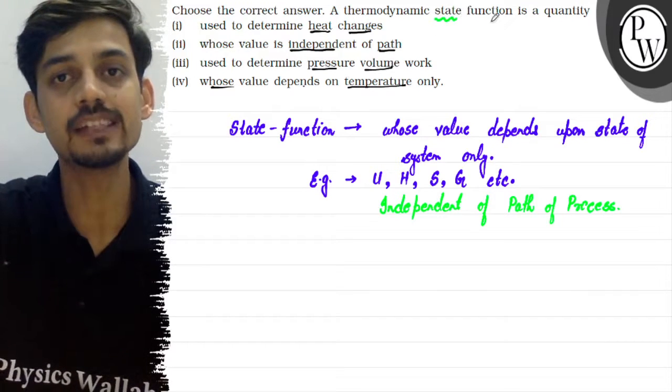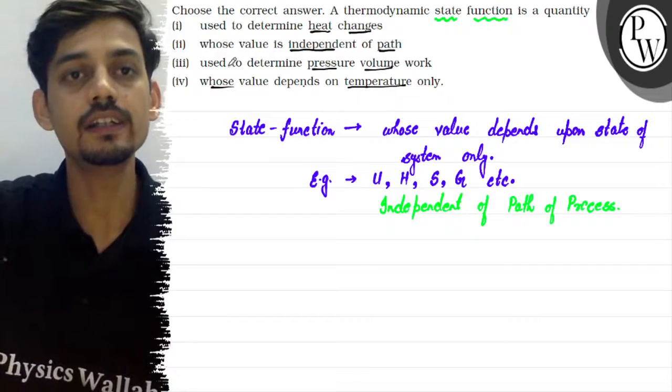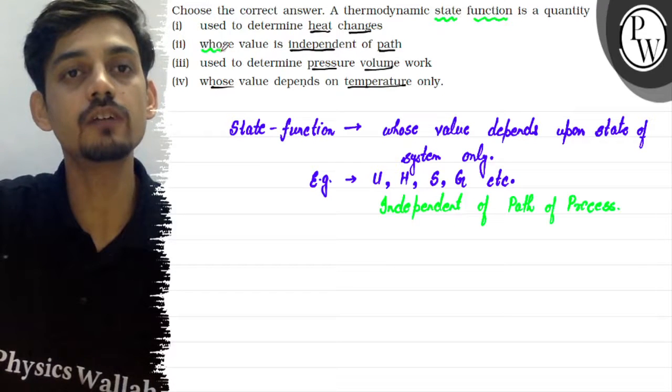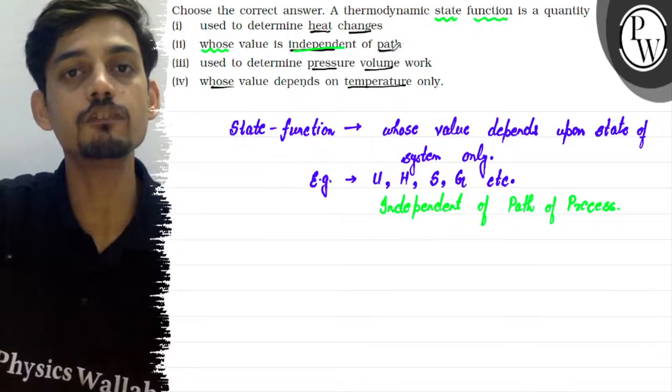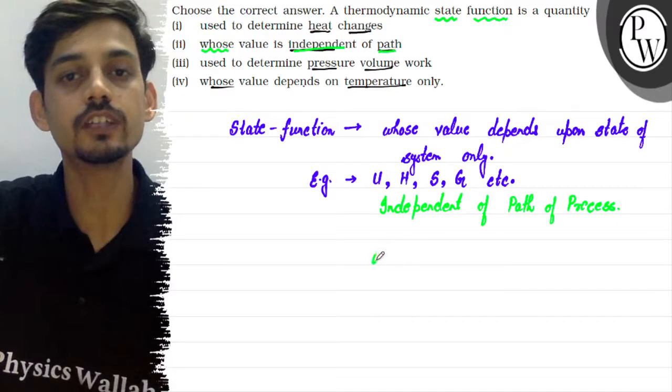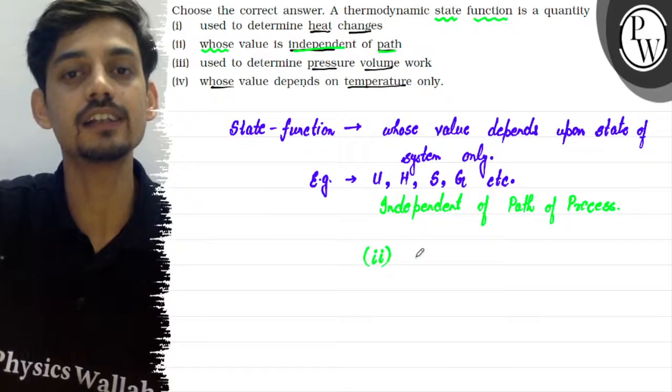As the question says, thermodynamic state function is a quantity. So option two is correct - whose value is independent of path. If we look at this question, option two would be the correct answer.